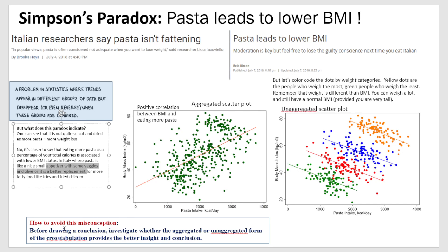To avoid this sort of misconception or paradox, it's important that before drawing a conclusion, we investigate whether the aggregated or un-aggregated form of the cross-tabulation or scatter plot provides a better insight. You would see this either in a scatter plot or in a cross-tabulation of the data. This has been an illustration of Simpson's Paradox, why it happens, and how we can avoid it.